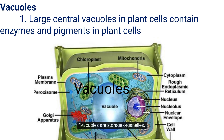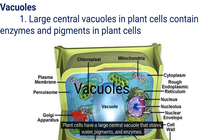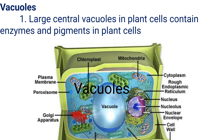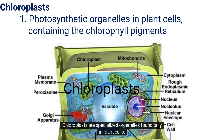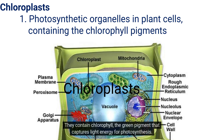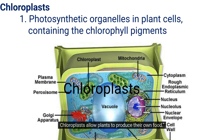Vacuoles are storage organelles. Plant cells have a large central vacuole that stores water, pigments, and enzymes. This vacuole helps maintain the plant's structure and supports growth. Chloroplasts are specialized organelles found only in plant cells. They contain chlorophyll, the green pigment that captures light energy for photosynthesis. Chloroplasts allow plants to produce their own food.